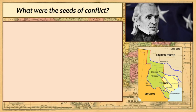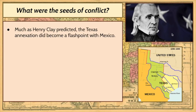The first question we're going to ask is: what were the seeds of conflict? How did the United States come into conflict with Mexico? We need to go back to lesson number four, where we learned about how Texas gained its independence from Mexico and eventually was annexed by the United States. In the election of 1844, the issue of Texas becoming part of the United States was a major issue in the campaign. So much as Henry Clay, the losing candidate in the 1844 election predicted, the Texas annexation did become a flashpoint with Mexico.